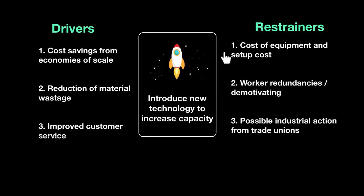What a business does at this point is start assigning a score or a value to each of these drivers and restrainers — this could be out of 5 or out of 10; we'll use 10. They rate each driver and restrainer to give them a weightage. Cost savings from economies of scale: let's say 5. Reduction of material wastage: 6. Improved customer service: 3. Totaling these up: 5 plus 6 is 11, plus 3 is 14. That's the score on the drivers side.